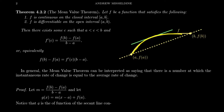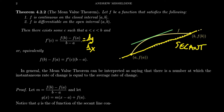The mean value theorem tells you, in a nutshell, that with some appropriate assumptions about continuity and differentiability, somewhere the function's instantaneous rate of change will equal its average rate of change. So our function f is a continuous, differentiable function like this. The average rate of change is delta y over delta x — the slope of the secant line connecting the point a comma f of a with b comma f of b. The slope of the tangent line equals the derivative dy over dx.